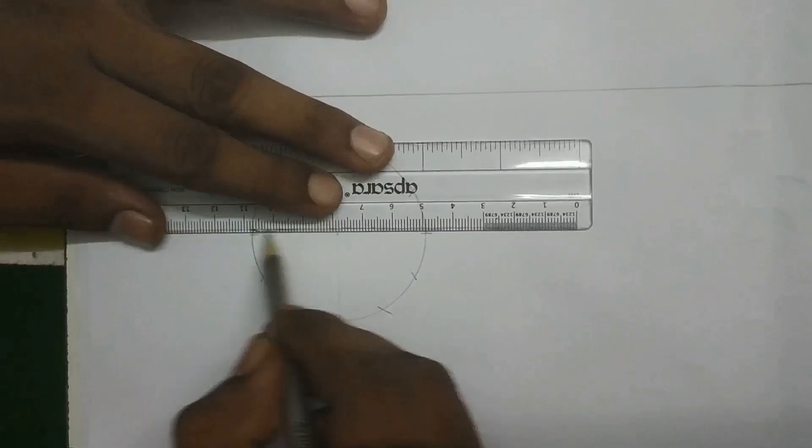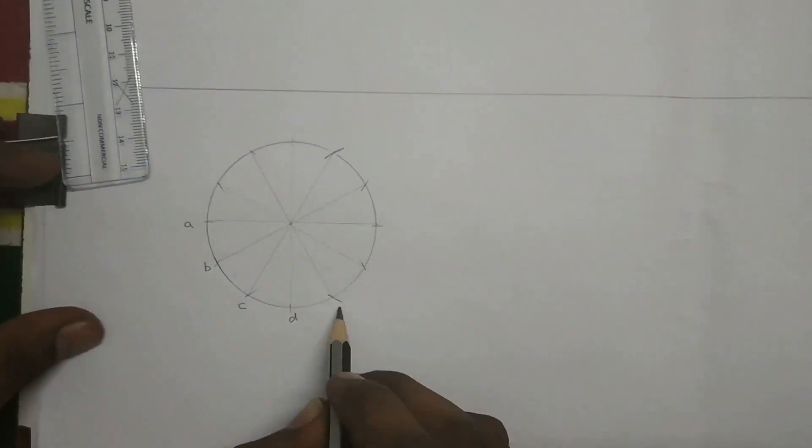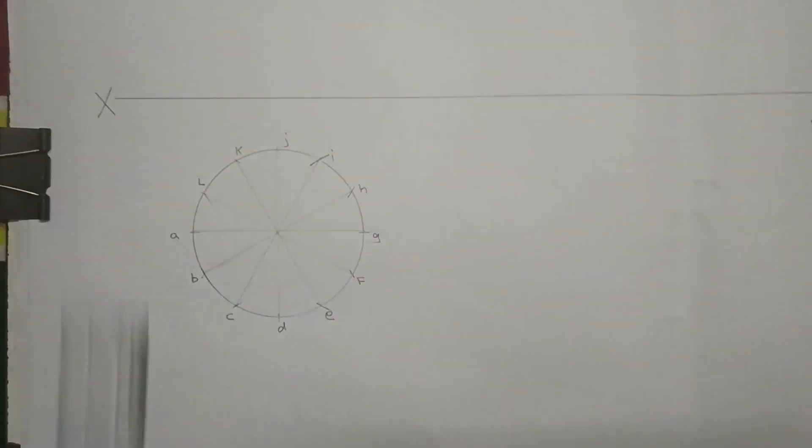I am giving alphabets as a naming A, B, C, D, E, F, G, H, I, J, K and L. And the apex point is O.